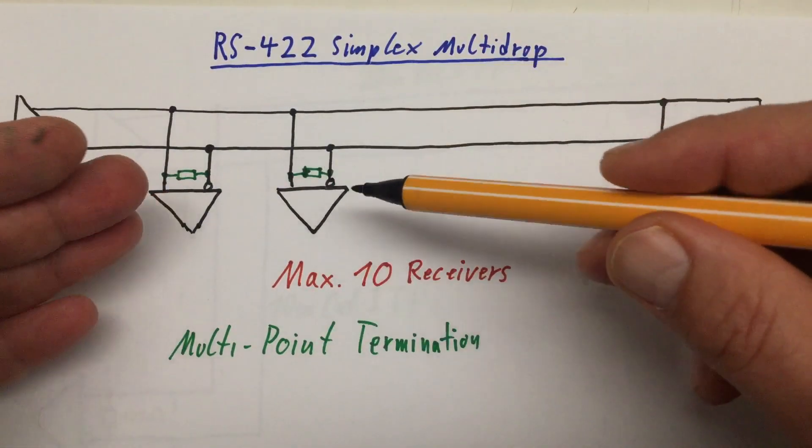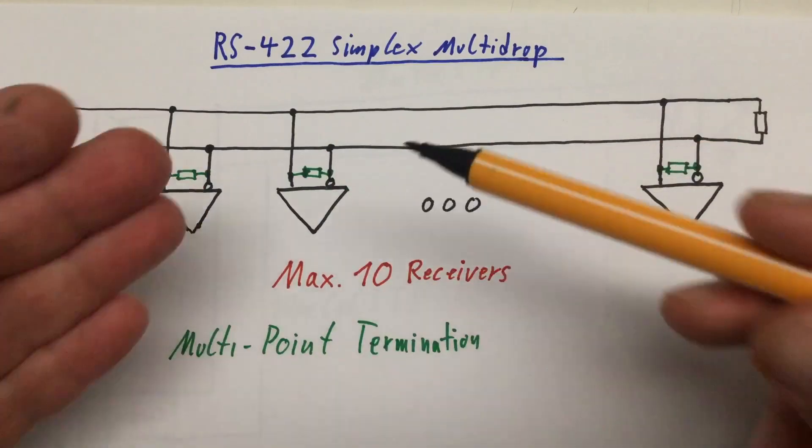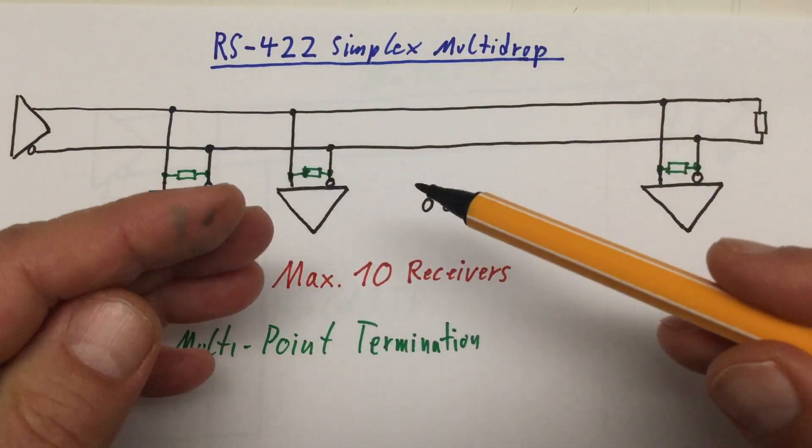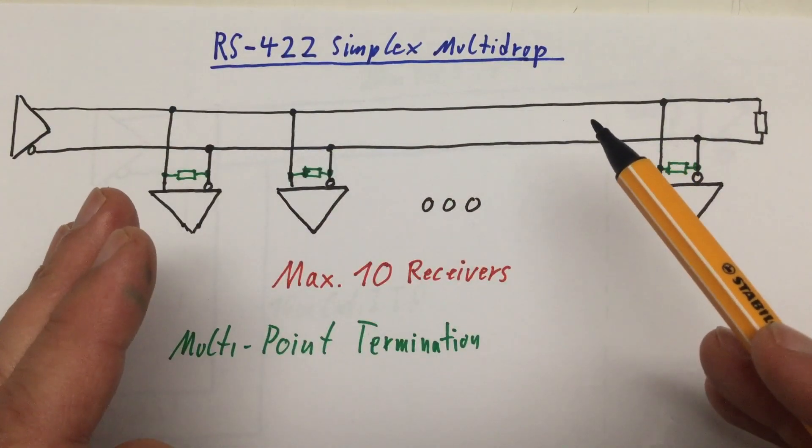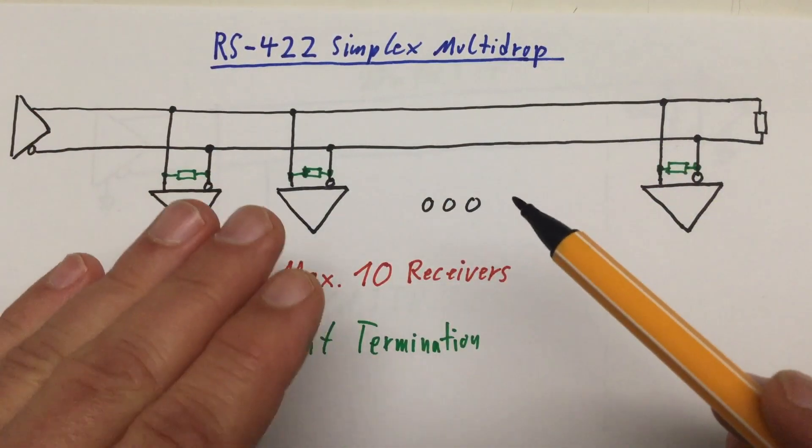But as you saw, at 10 MHz stub length, that totally messed up the whole transmission line. Okay, let's move on.